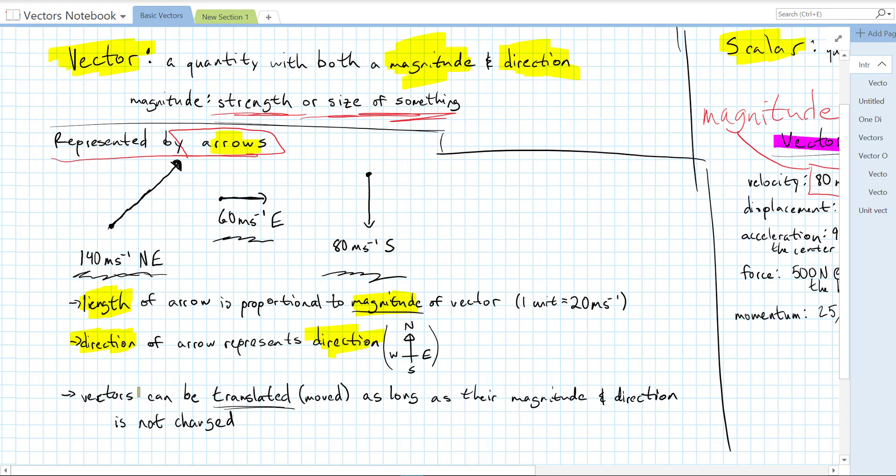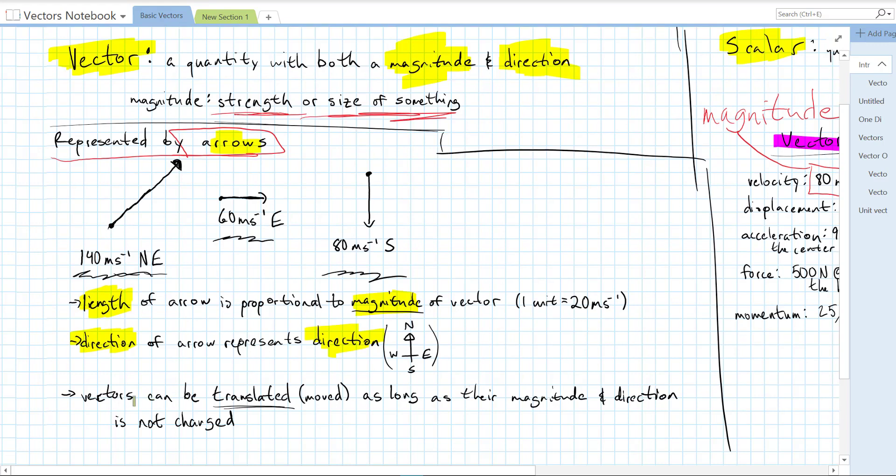So if we draw out a vector, that pretty much fully represents the magnitude and direction of that vector. Vectors can be translated, that means slid around, as long as their magnitude and direction is not changed. As long as we don't change their size, as long as we don't change the direction that they're pointing, because they still have the same magnitude and direction.